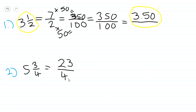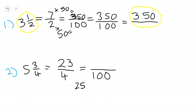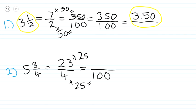Now we have to find an equivalent fraction for 23 over 4 with a denominator of 100. We ask ourselves: how many times does 4 go into 100? That's 25 times. So four times 25 equals 100. Then we do the same with the numerator: 23 times 25, which equals 575.